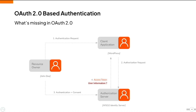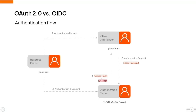Hence, the client application is not aware of user-related information. We can bridge this gap by sending the user information to the client application after the user's interaction with the authorization server. Let's look at an elaborated OIDC flow for further understanding.